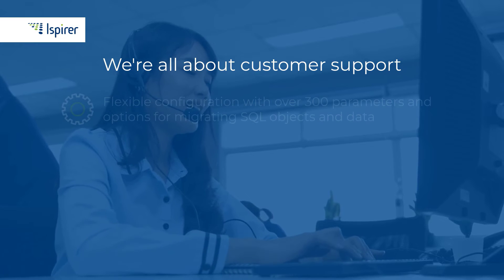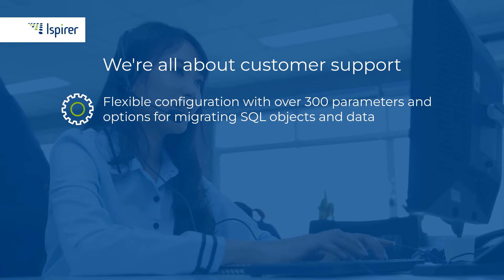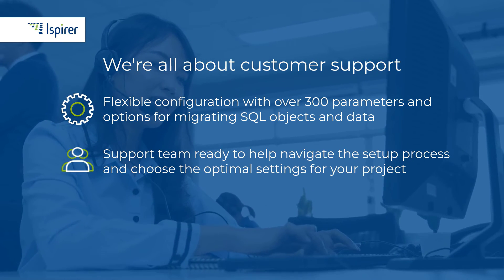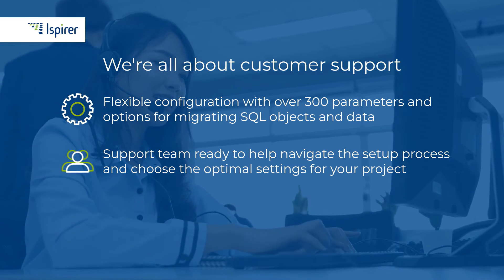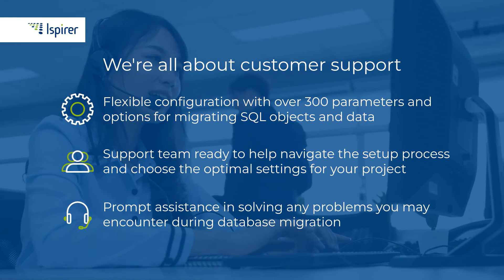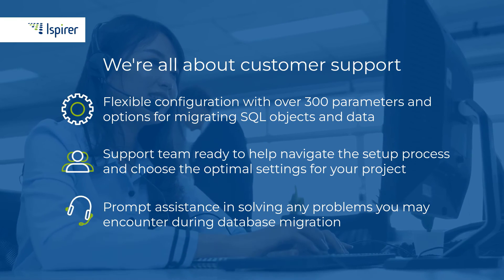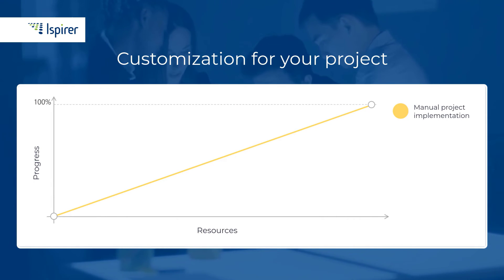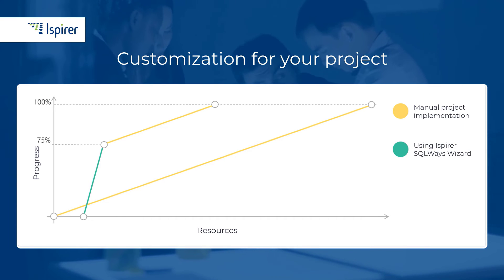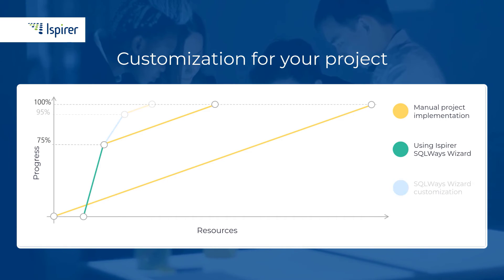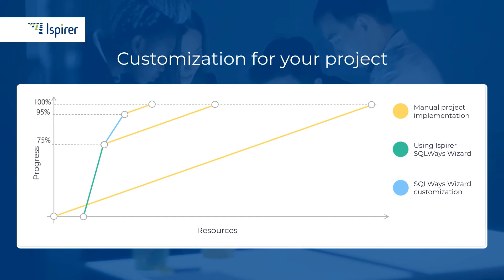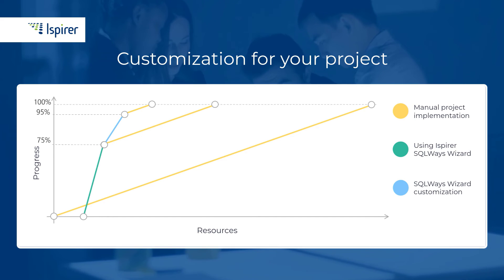SQL Waze Wizard is effective thanks to its flexible configuration with over 300 parameters and options for migrating SQL objects and data. You can always count on our experienced support team to help you navigate the setup process and choose the optimal settings for your project. Our experts will promptly help you solve any problems you may encounter during database migration. All migration projects are unique, so it's hard to provide a single automated solution for every case. With SQL Waze Wizard, it's different — we can customize it by adding new conversion rules to tune it to the specific migration project at hand, allowing you to achieve up to 100% automation of your database migration.